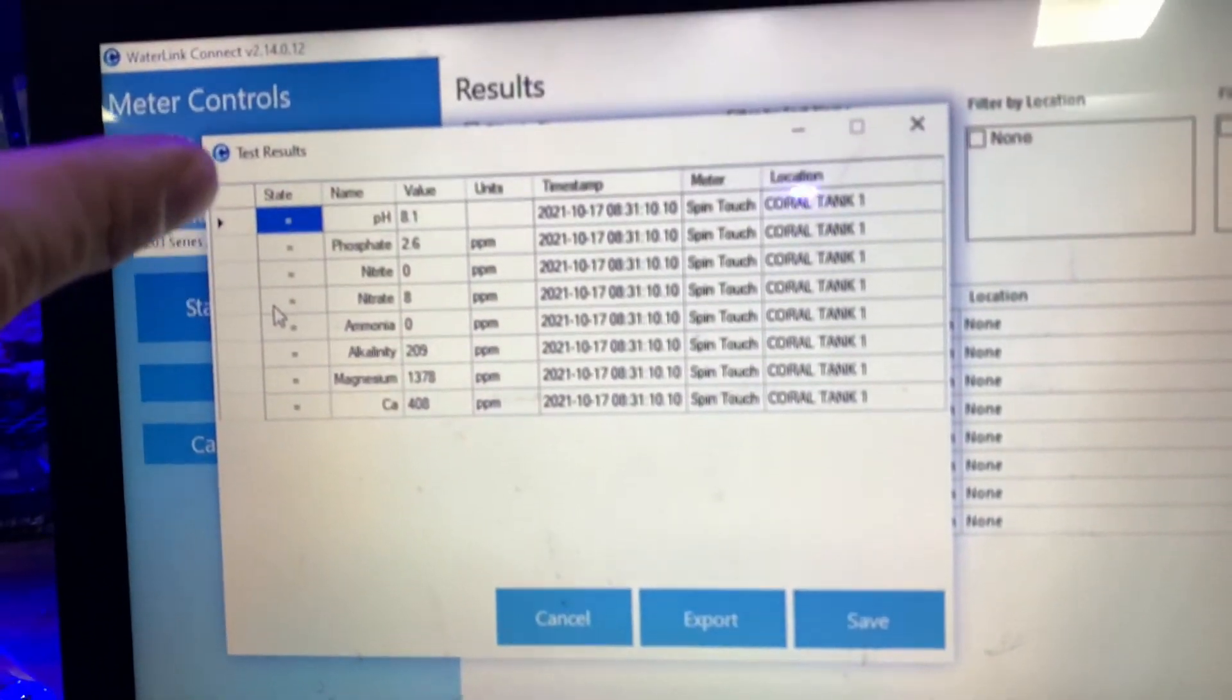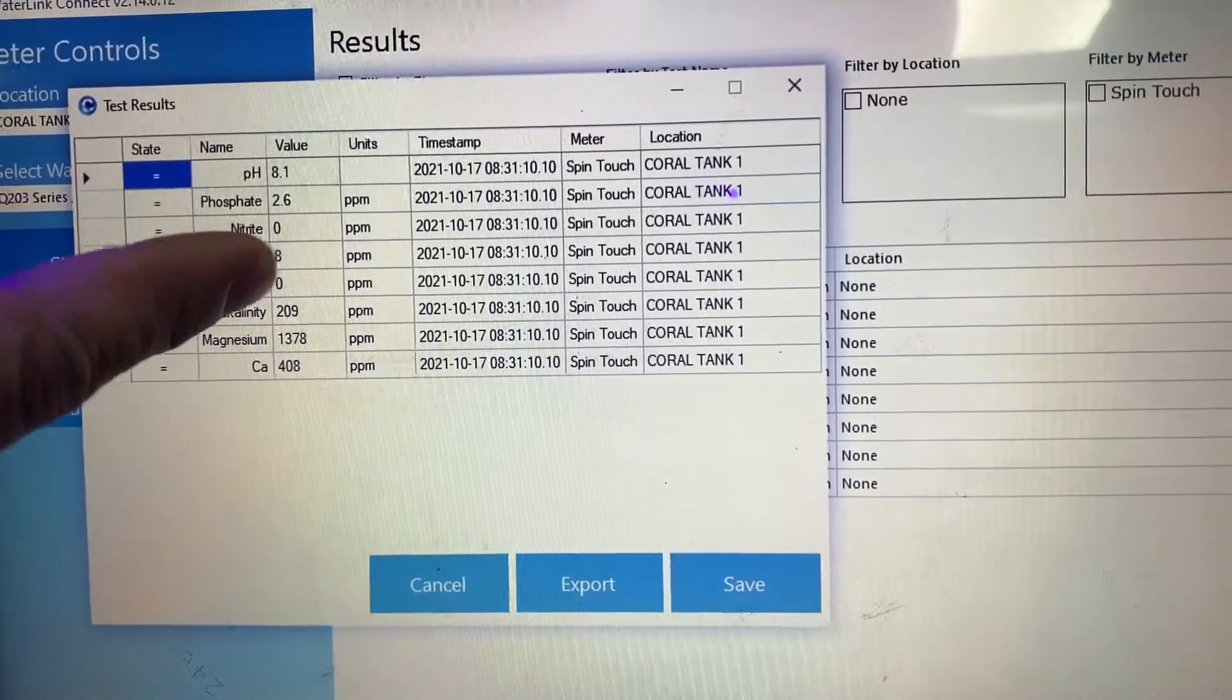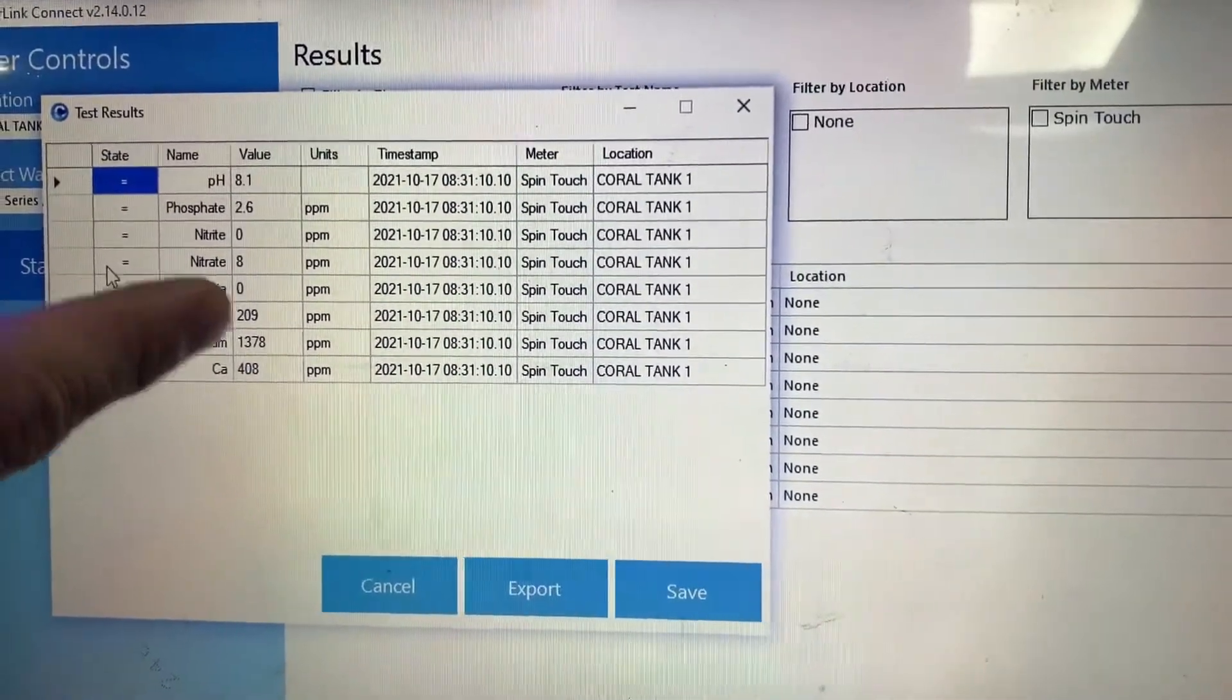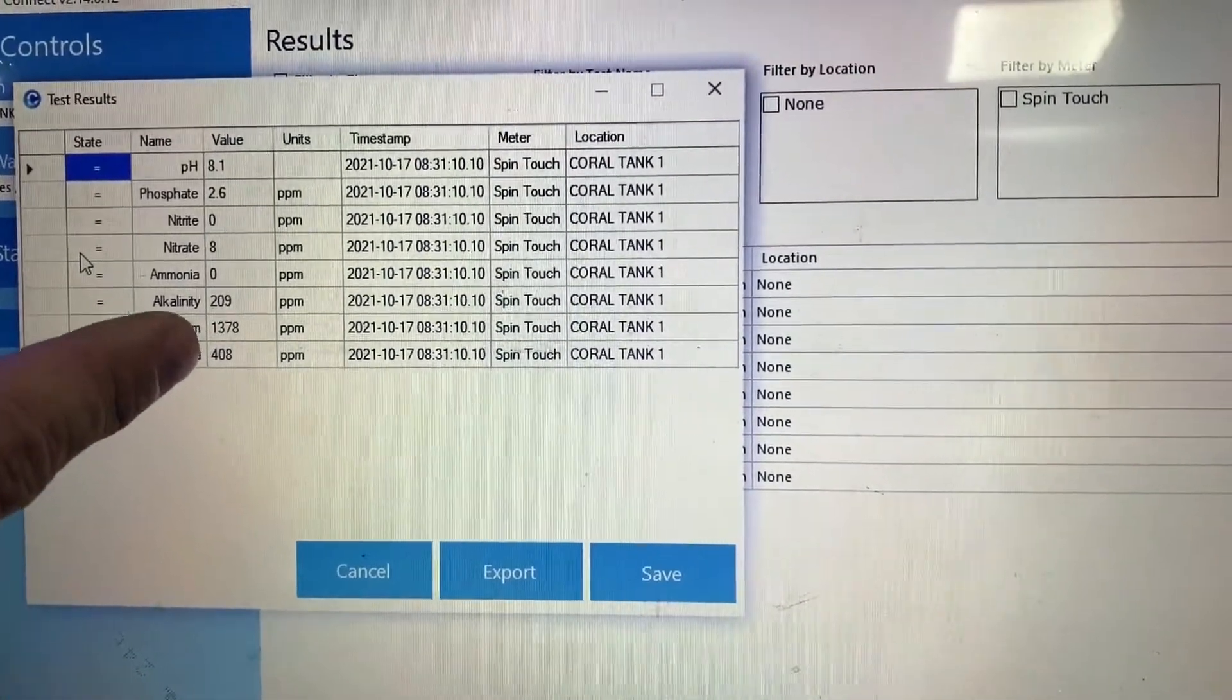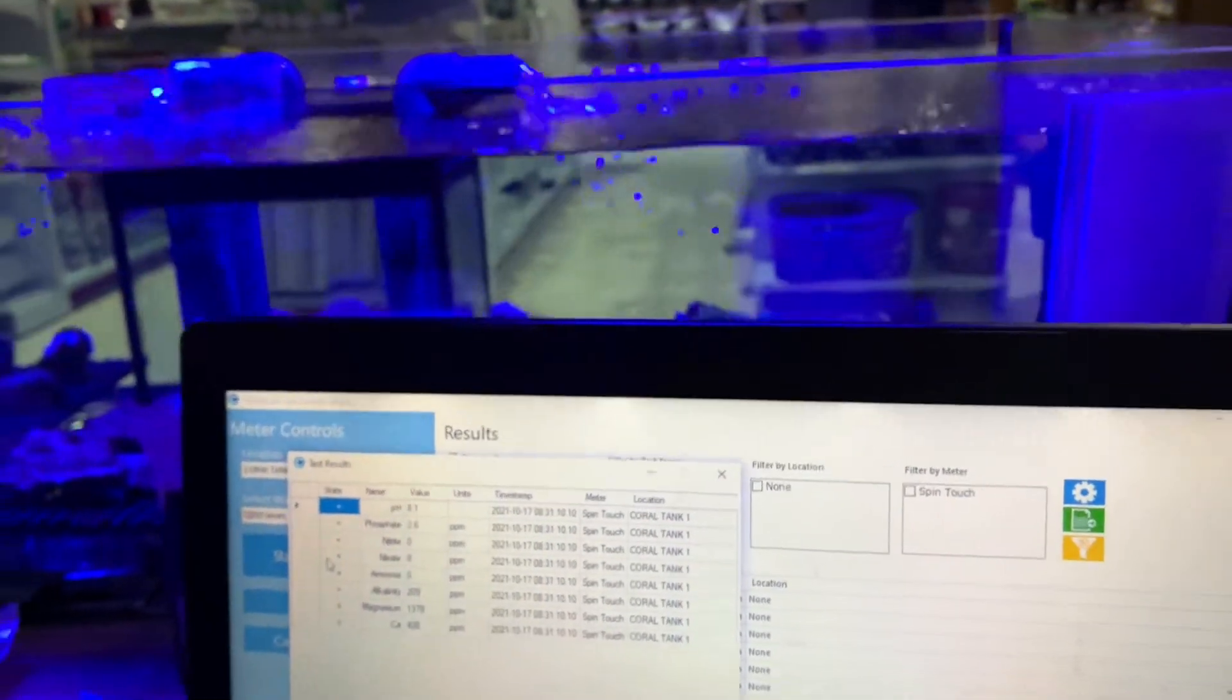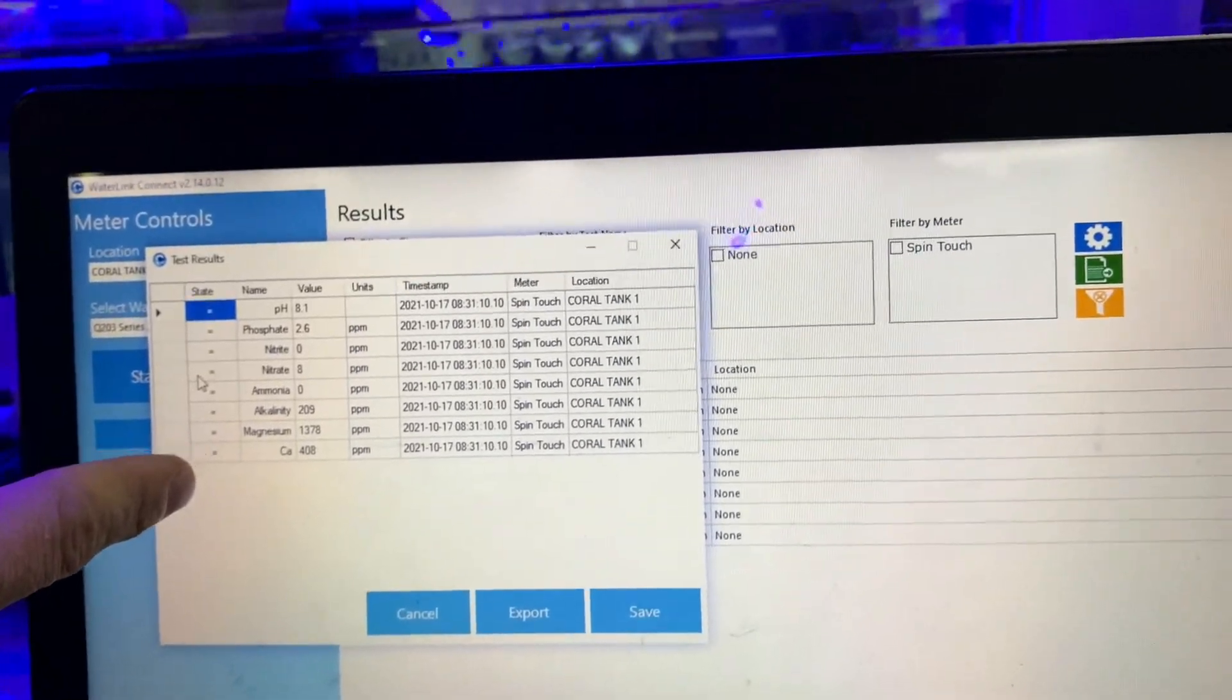As what you can see, this is the new reading now. The pH is 8.1. Phosphate is a bit high. That's 2.6. Nitrite is zero. That means it's very good. Nitrate is eight, which is acceptable. Ammonia, zero. Alkalinity is 200 BPM. Magnesium is 1,278, which is also good. And calcium is 408. That means this coral tank here has a perfect level of reef foundation. They need this trace element for calcification.